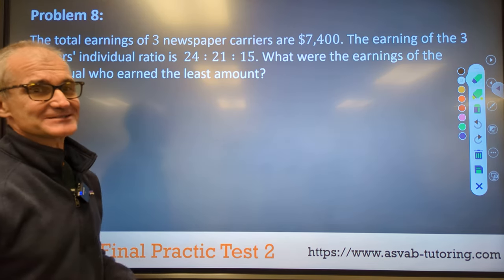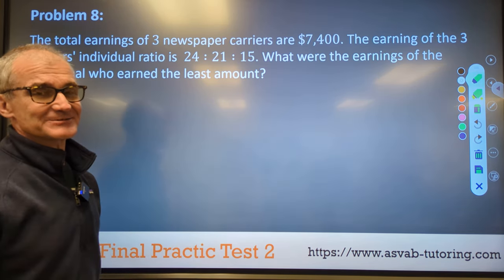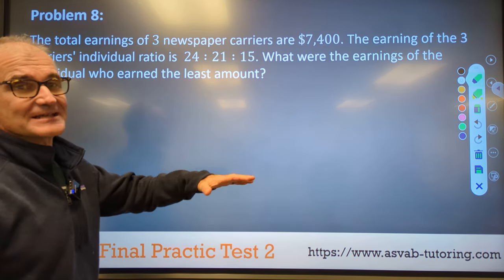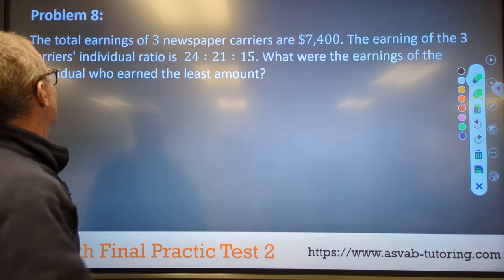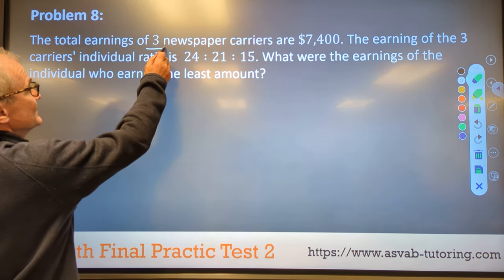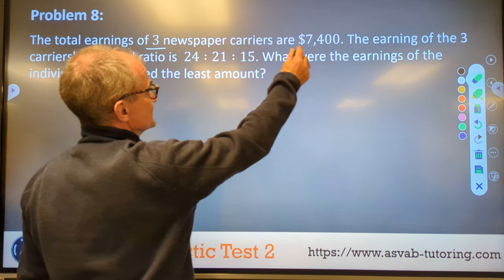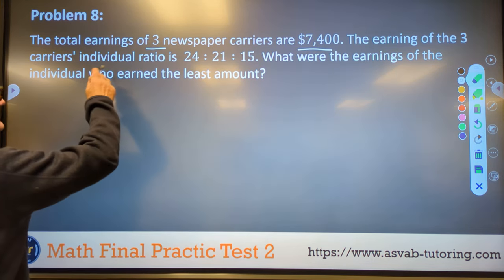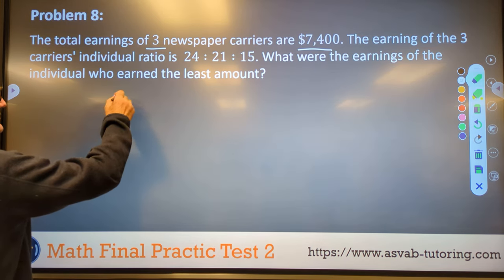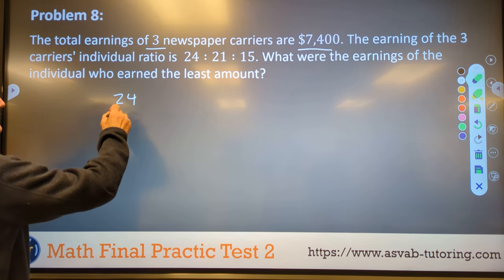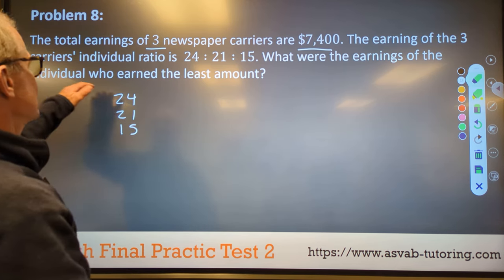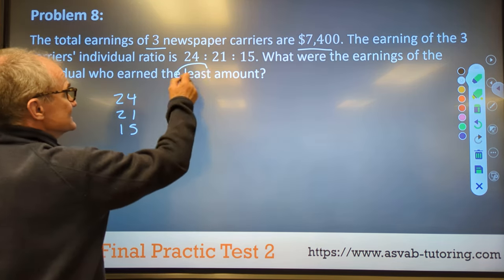If you're new to the channel, think about subscribing and sharing the channel with anybody who might be interested in taking a standardized math exam and improving that score. All right, the total earnings of three newspaper carriers is $7,400. Of the three carriers individual ratio is 24, 21, 15.